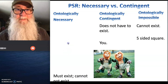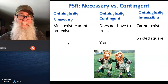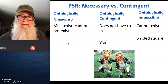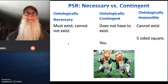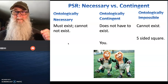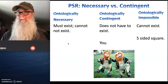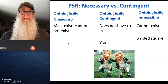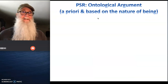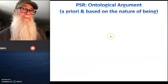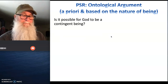Now the question is: is there anything that has to exist? It cannot not exist. Can you think of anything that would be ontologically necessary — something it would be impossible for to not exist? This takes us to our ontological argument about God.